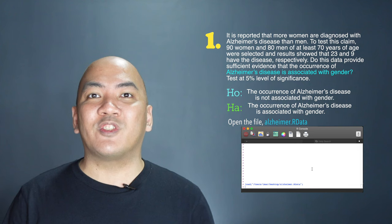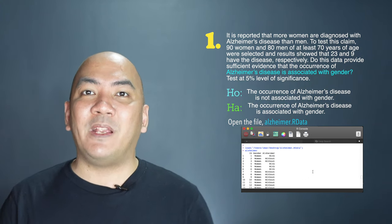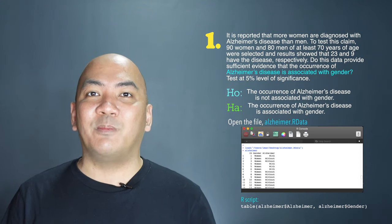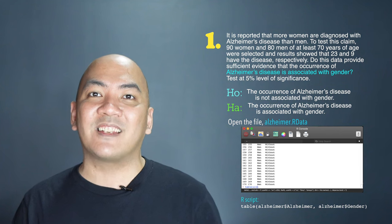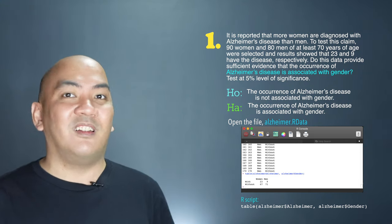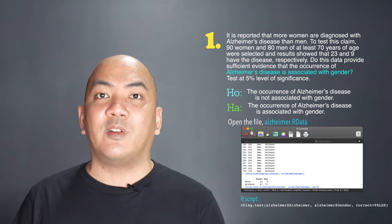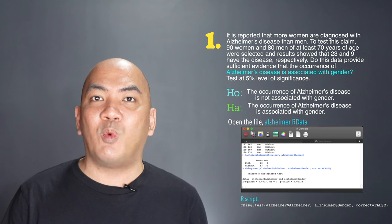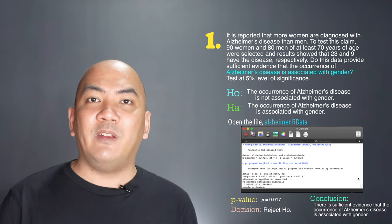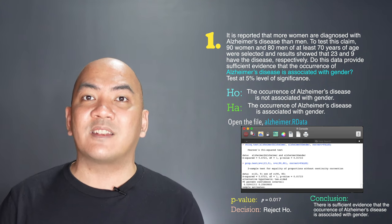In R, we open the file alzheimer.rdata and use the two essential columns: alzheimer and gender — which identify whether the patient has Alzheimer's disease and whether the patient is a man or woman, respectively. Using the table function — table(alzheimer$alzheimer, alzheimer$gender) — we display the 2x2 table. Then using the chisq.test function, we get a p-value of 0.01723, exactly the same as from the prop.test or z-test for two proportions. With a p-value less than 0.05, we reject the null hypothesis and conclude there is an association between the occurrence of Alzheimer's disease and gender.